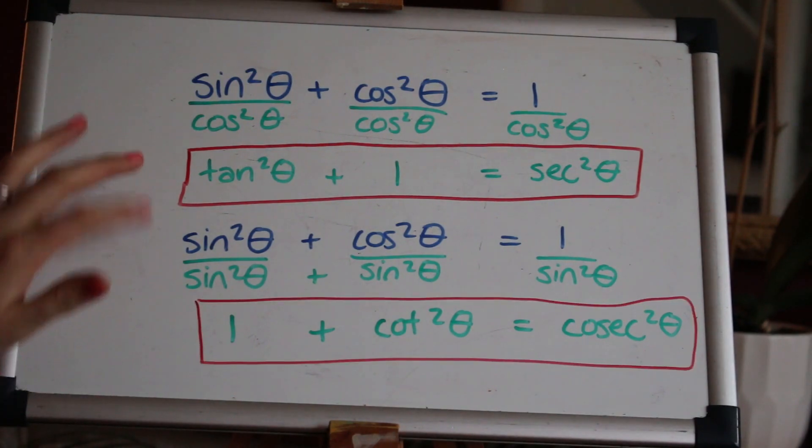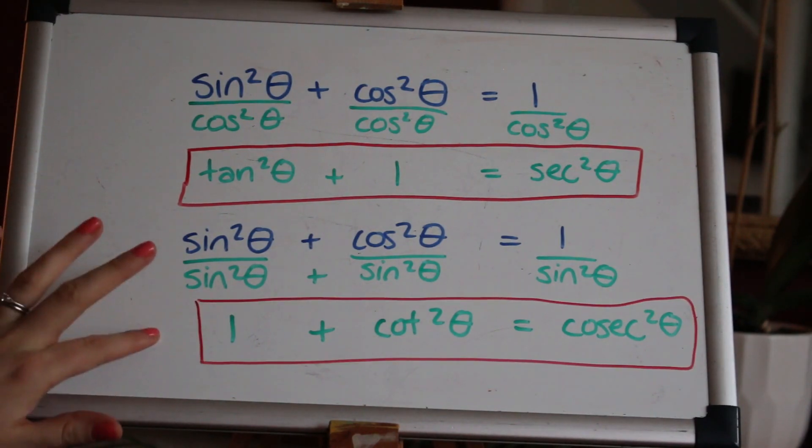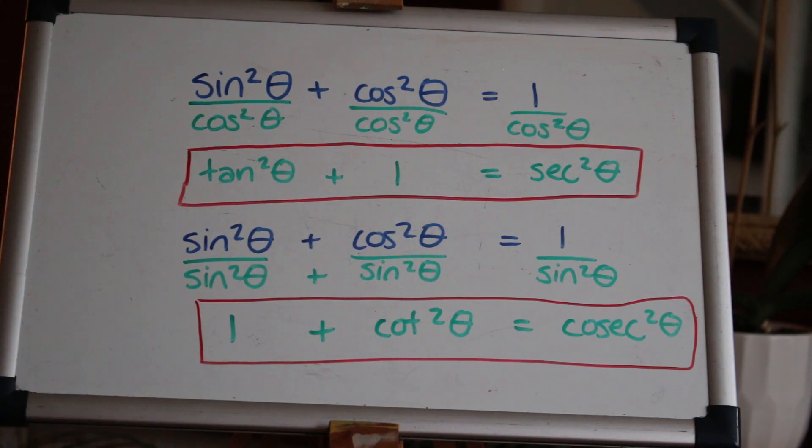These two identities are best memorised so you know them off by heart and that's the quickest way to use them and it also means you'll be better able to recognise when you're using them. But of course you can always derive them like I've done now. It's very quick to do so it might be worth doing in an exam. Okay, let's take a look now at using these in questions.